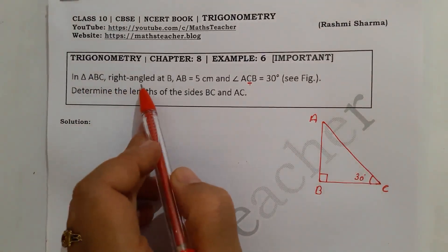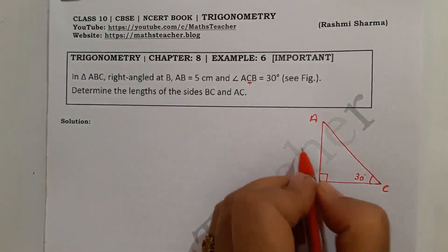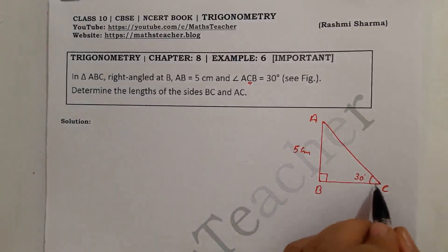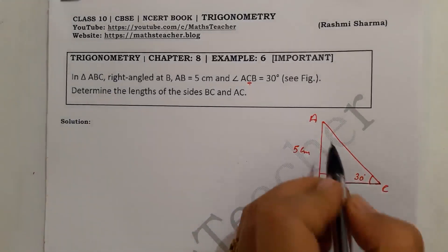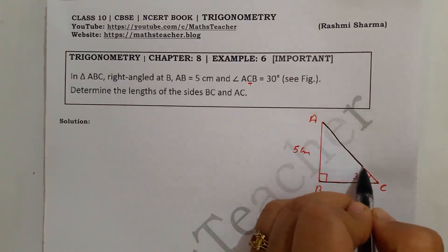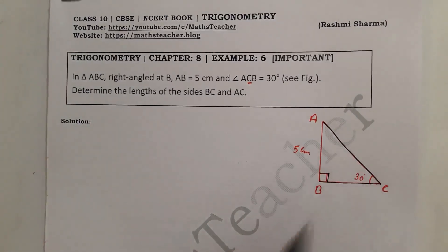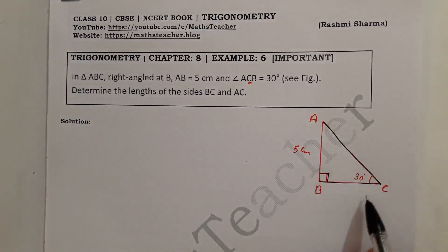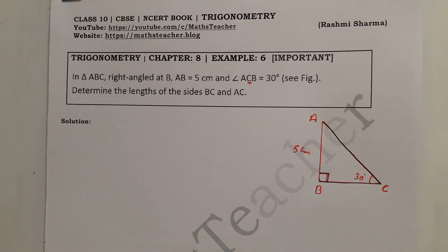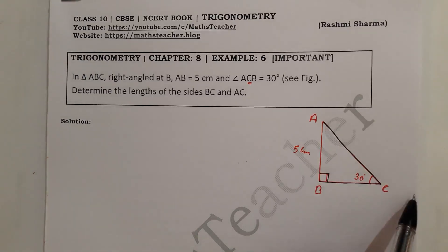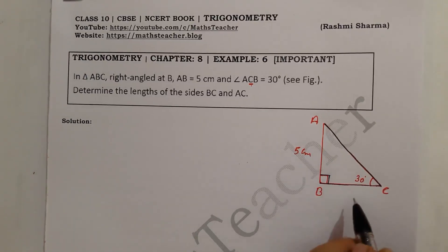In right-angled triangle ABC, right angle at B, AB is equal to 5 cm. We need to determine the lengths of sides BC and AC. Since we only have one side given and no other side, we cannot use Pythagoras theorem directly. So we will use trigonometric ratios.